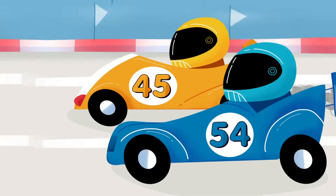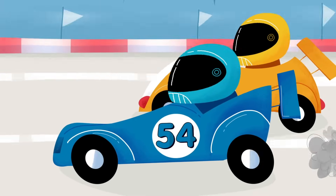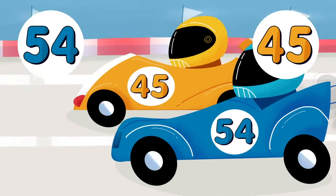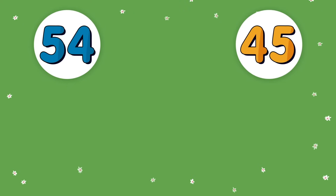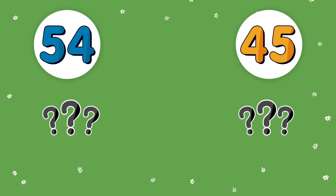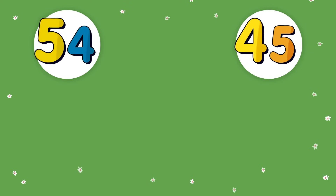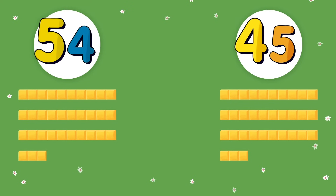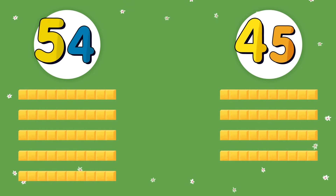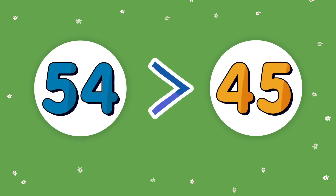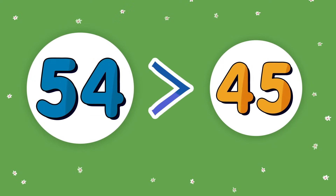I can hear some cars getting ready to race. Let's compare their numbers. Do you remember where we start when we compare? They both have 4s and 5s in their number, but the one with the 5 in the tens place has a greater value. That's why we should always start at the left with the largest place. 54 is greater than 45. That also means that 45 is less than 54.